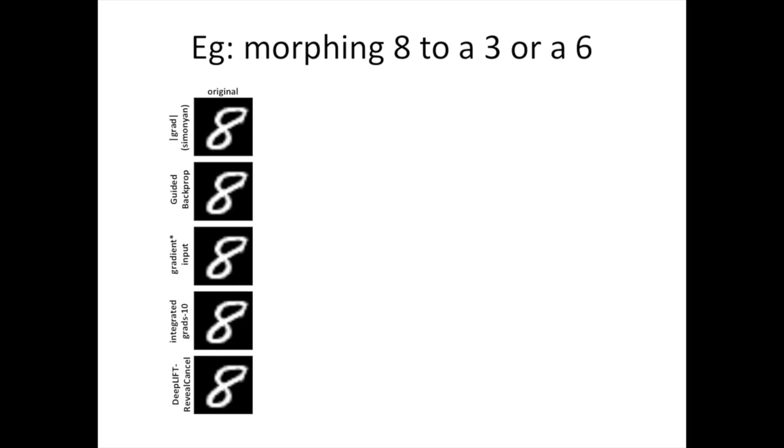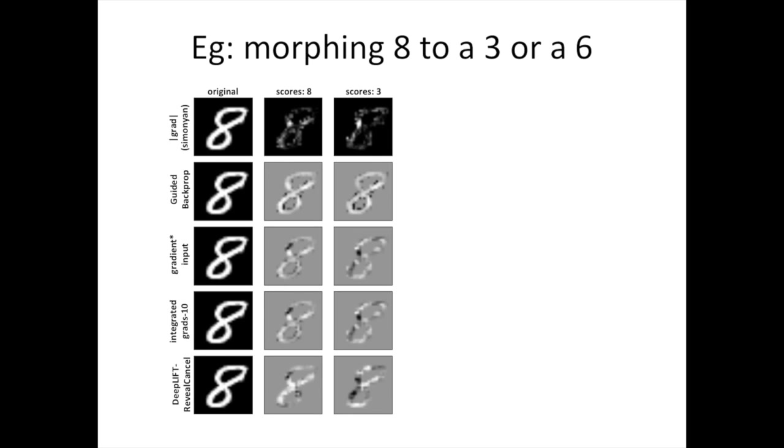Let's first consider morphing the digit into a 3. Here are the scores for class 8 for the different methods, and here are the scores for class 3. Note that guided backprop produces little difference between the two classes, which is in part explained by the fact that guided backprop discards the negative gradients and is therefore unable to identify negative features.